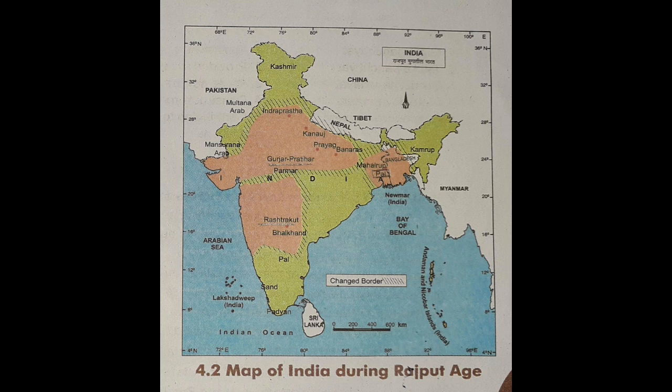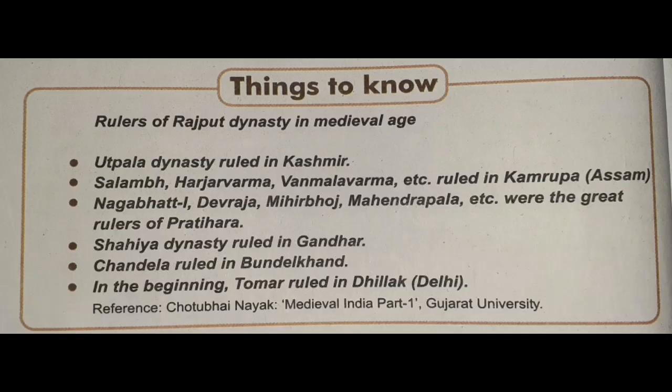This whole portion was ruled by them. And in the east of India, you will also find orange color where Paal is written, so that portion was conquered by the Paal dynasty.